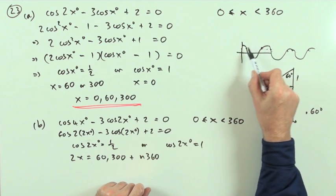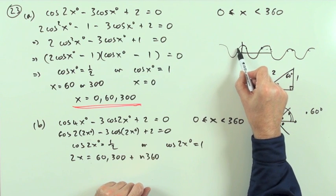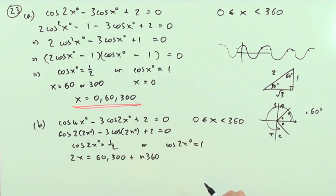Meaning simply that these answers are repeated every wavelength. You could keep adding on 360s to get new ones going forward, or if your answers are too big, you could keep taking off 360s to get answers going backwards.